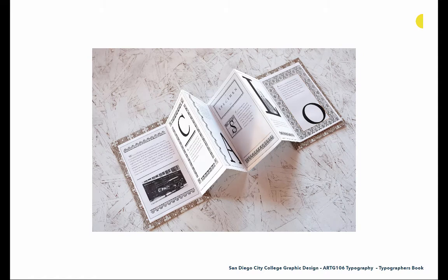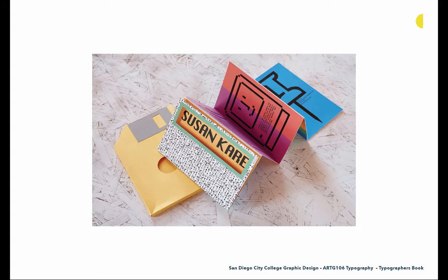Here are some examples of past work from students. This is one about William Caslon, and you can see the way the accordion structure works and how this information kind of spills from one spread to another. The task is really about taking the personality or the design sensibility of the person you're assigned and reinterpreting it and creating this book utilizing those elements.